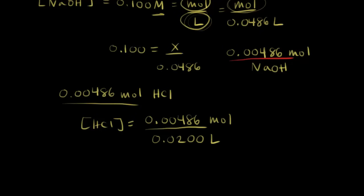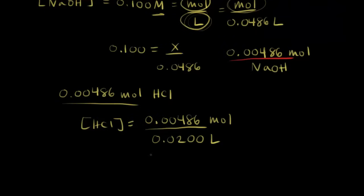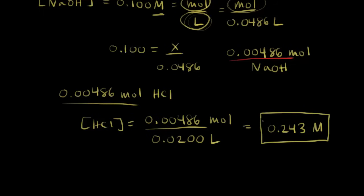We take out the calculator and do this calculation: 0.00486 divided by 0.0200, and we get 0.243. So the concentration of HCl is equal to 0.243 molar. We've solved for the original concentration of HCl.